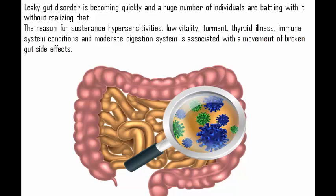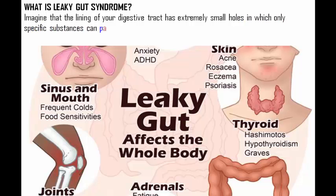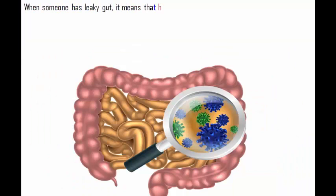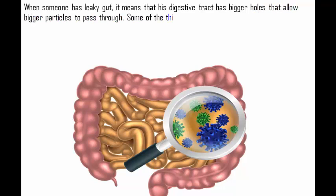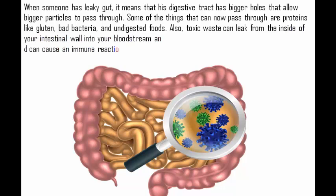What is leaky gut syndrome? Imagine that the lining of your digestive tract has extremely small holes through which only specific substances can pass. Your gut lining is a barrier that keeps out bigger particles that can damage your system. When someone has leaky gut, it means that his digestive tract has bigger holes that allow bigger particles to pass through — proteins like gluten, bad bacteria, and undigested foods. Also, toxic waste can leak from inside your intestinal wall into your bloodstream.